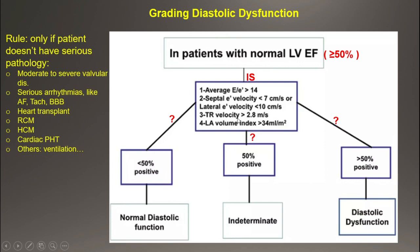For TR velocity, we use a cutoff of 2.8 meters per second. The reason is that at this velocity, pulmonary artery systolic pressure reaches the upper limit of normal, and above this, we have elevated pulmonary pressure. If three of these four parameters are positive, the patient has diastolic dysfunction. If three are negative — meaning only one is positive — the patient has normal diastolic function. If two are positive and two are negative, it is indeterminate and inconclusive.